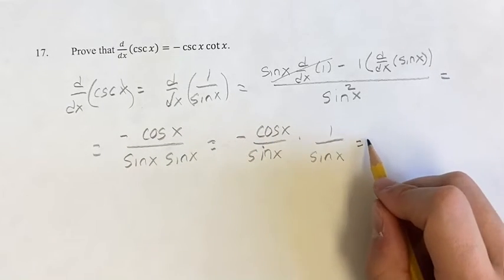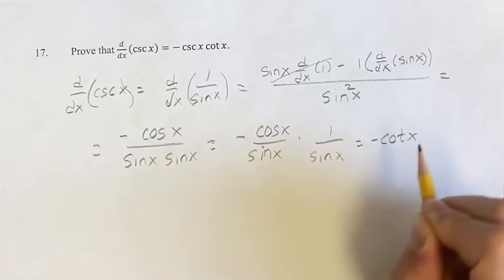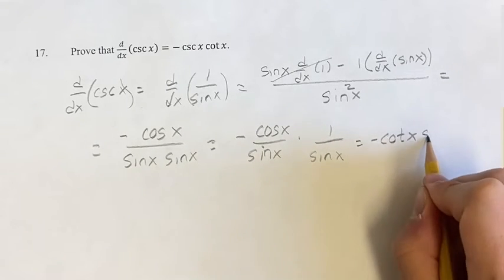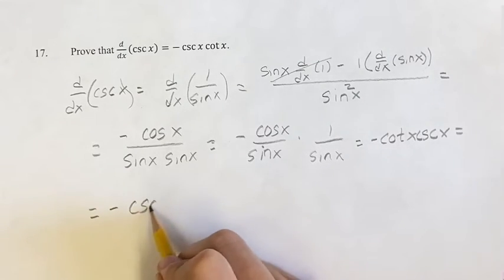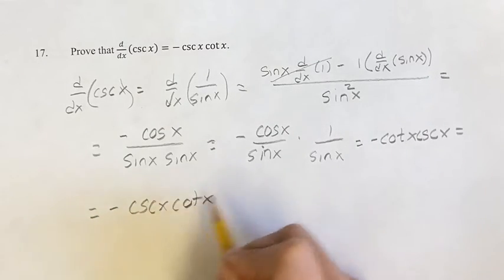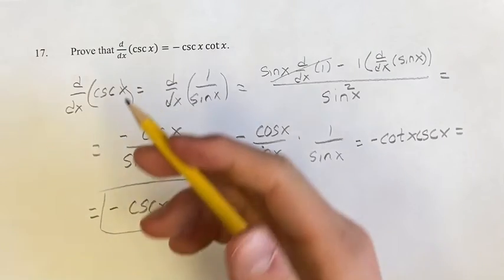Cosine over sine is cotangent, so this is negative cotangent x. And then 1 over sine x is cosecant x. So this is equal to negative cosecant x cotangent x, which is what we were looking for in the beginning. And we've now proven that these are equal.